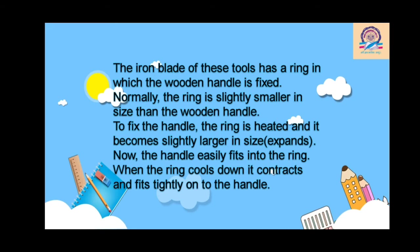In the process of expansion, when a substance or material gets heated, that material expands. As the ring expands, it properly fits on the wooden handle. How does expansion take place here? After the expansion, that ring easily fits on the wooden stick. And when the ring cools down, it contracts and fits tightly on the wooden handle. This is how contraction and expansion are applied in daily life.